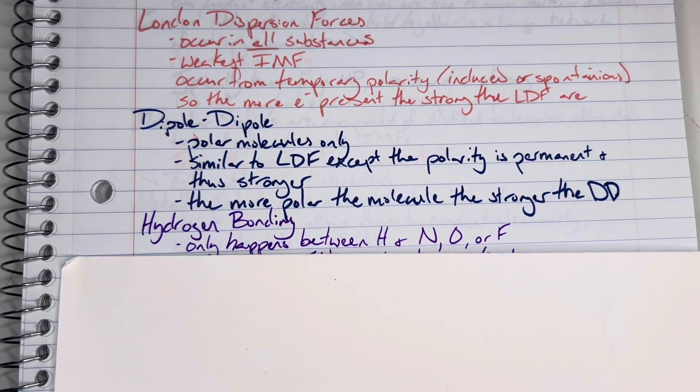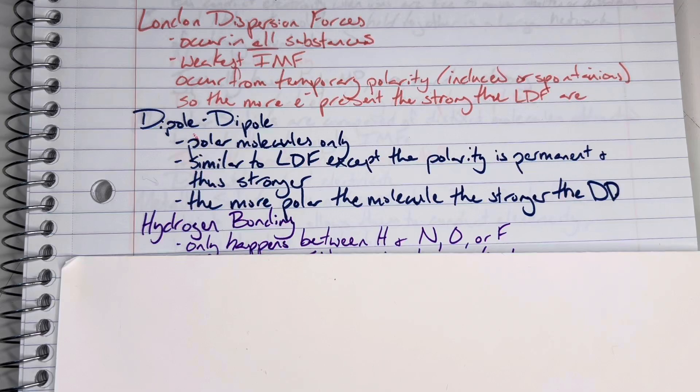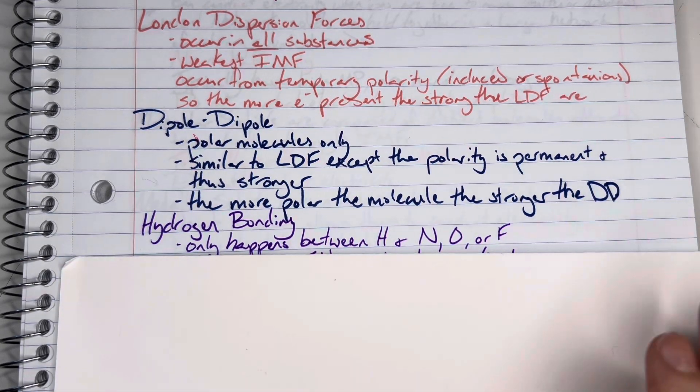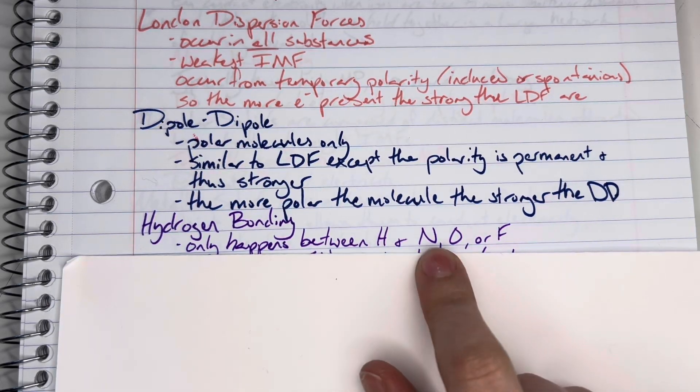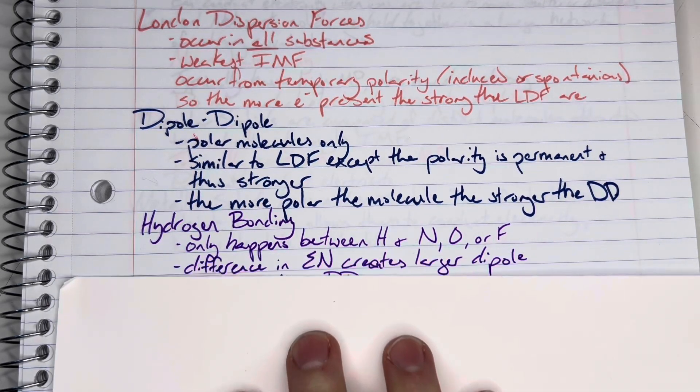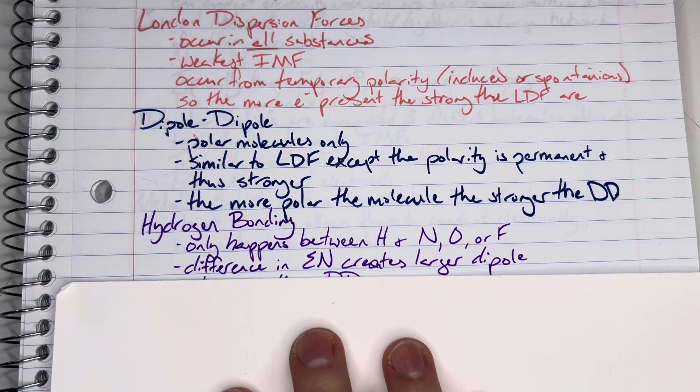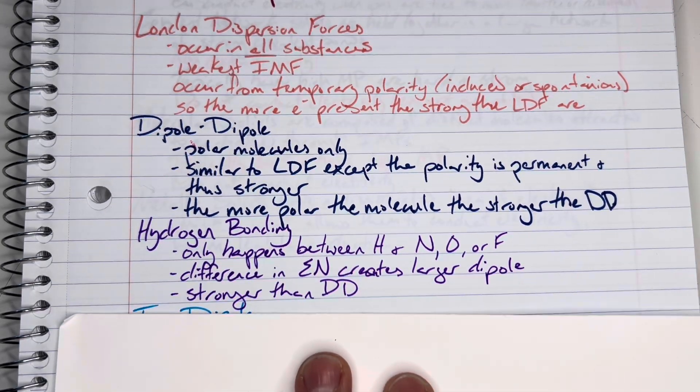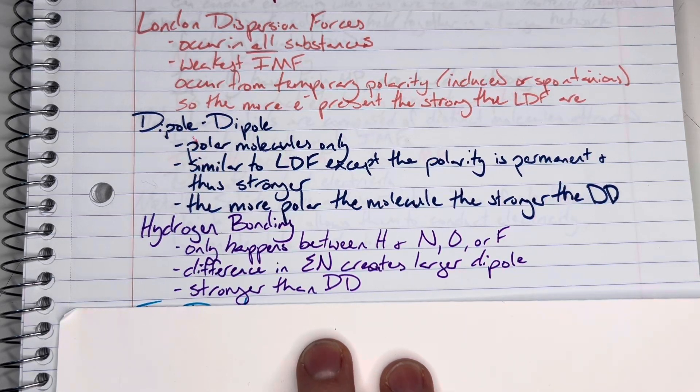Also, I have seen hydrogen bonds are FON, F-O-N, so fluorine, oxygen, and nitrogen, whichever way you want to memorize that. But hydrogen bonds can only happen between hydrogen and a molecule containing nitrogen, oxygen, or fluorine. The difference in electronegativity creates a larger dipole than what we see in dipole-dipole, and so they are stronger than dipole-dipole.